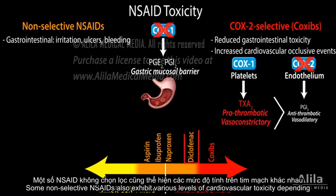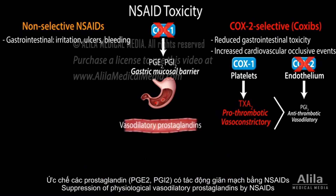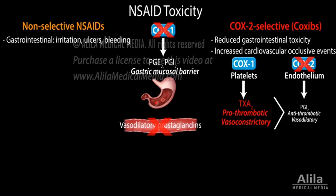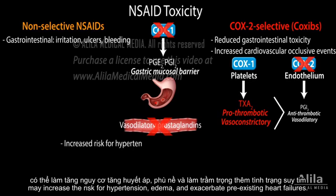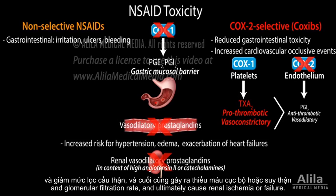Some non-selective NSAIDs also exhibit various levels of cardiovascular toxicity, depending on their COX2 vs. COX1 inhibition ratio. Suppression of physiological vasodilatory prostaglandins by NSAIDs may increase the risk for hypertension, edema, and exacerbate pre-existing heart failure. Inhibition of renal vasodilatory prostaglandins, in the context of circulatory stress, may reduce renal blood flow and glomerular filtration rate, and ultimately cause renal ischemia or failure.